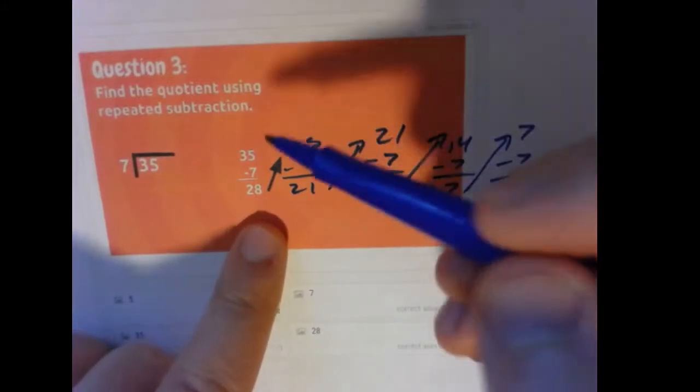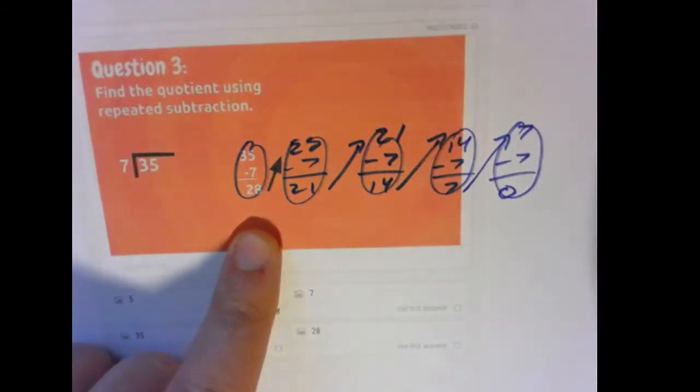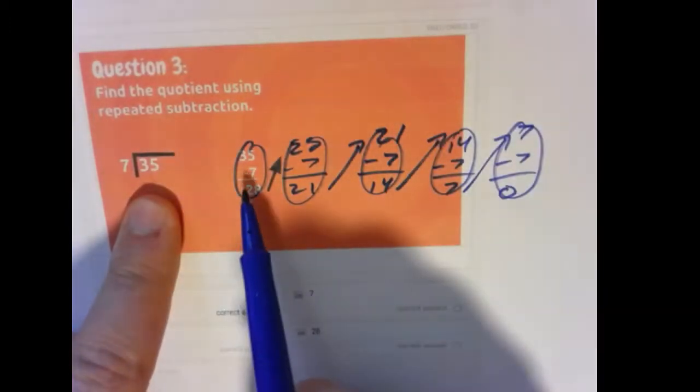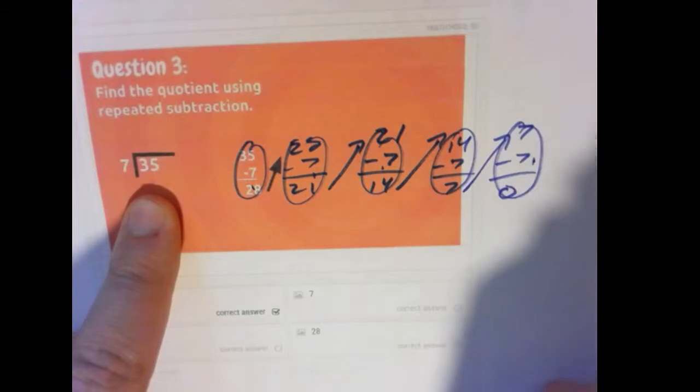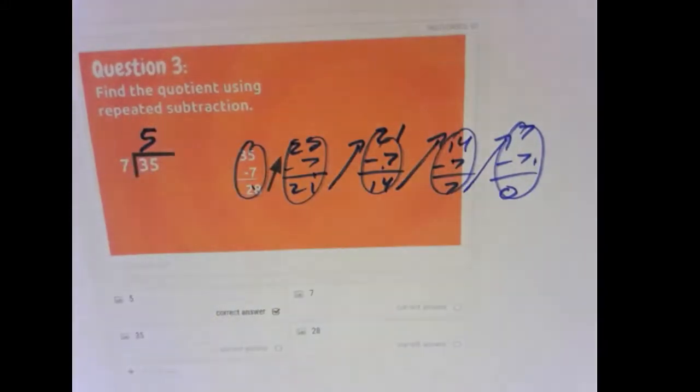How many cycles or operations did we do? 1, 2, 3, 4, 5. So we subtracted 7 from 35 five times. 35 divided by 7 makes 5.